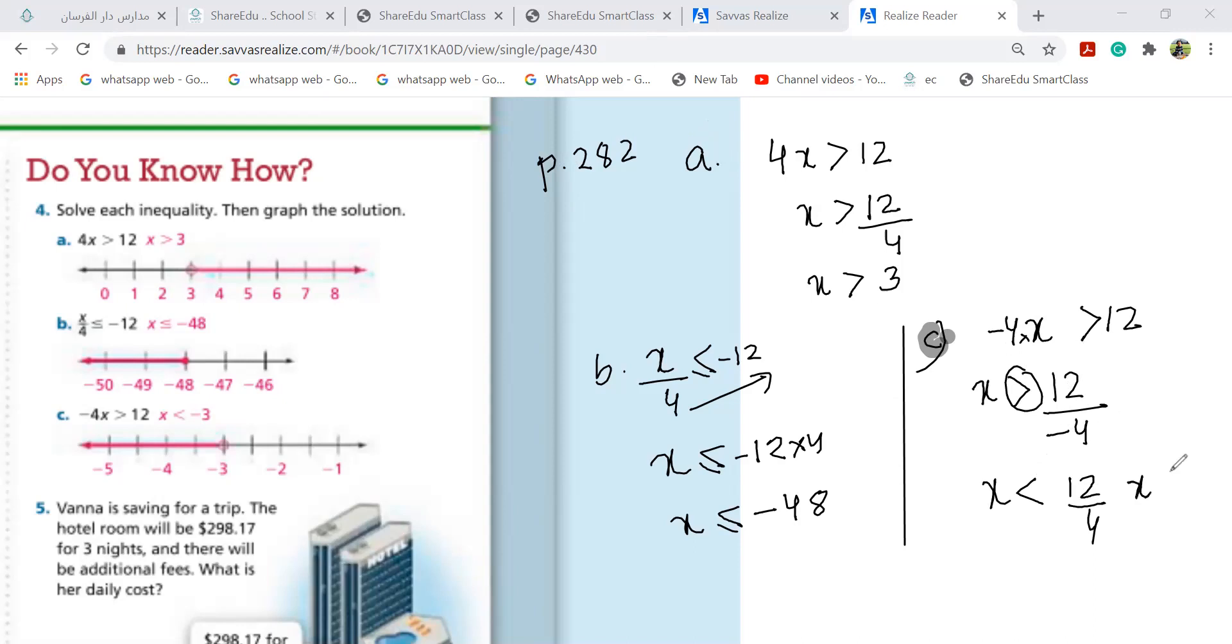Minus 3, sorry. So you put your point here, minus 3, and then you go to the left side.